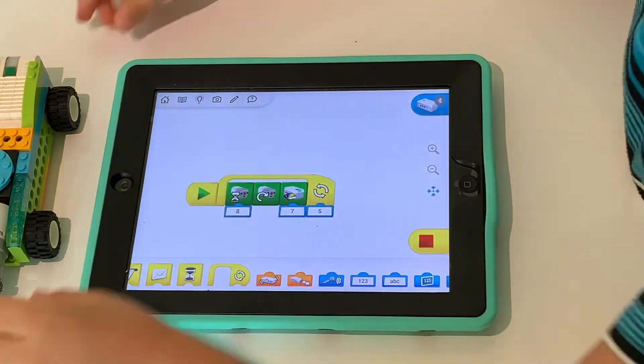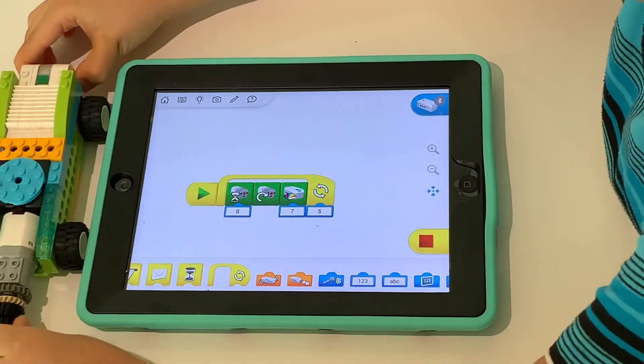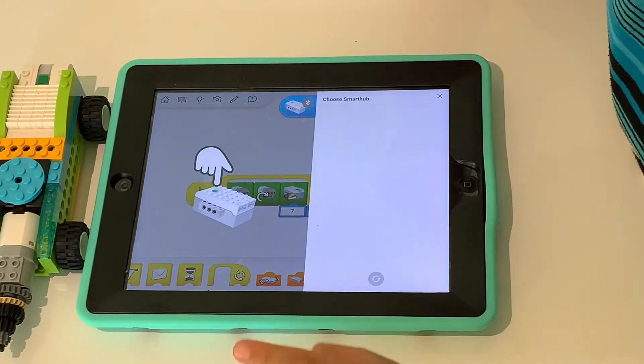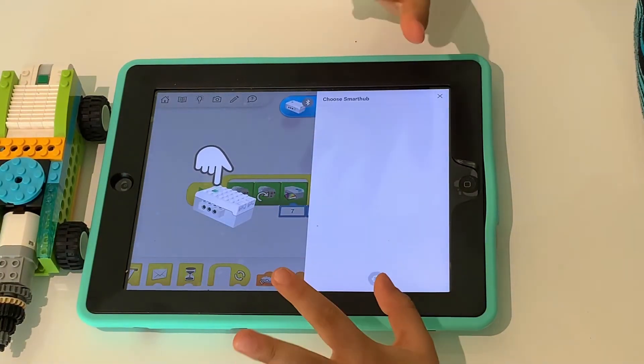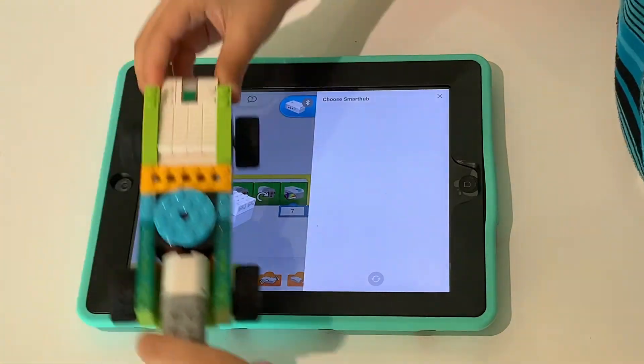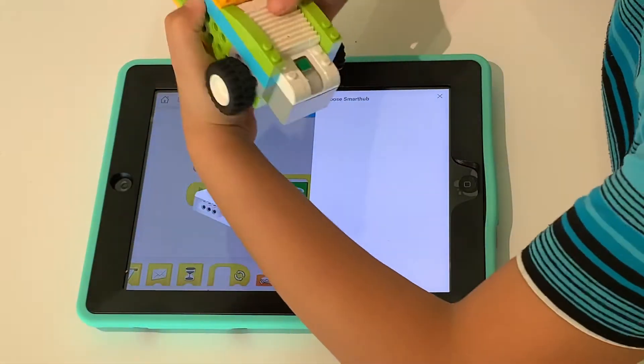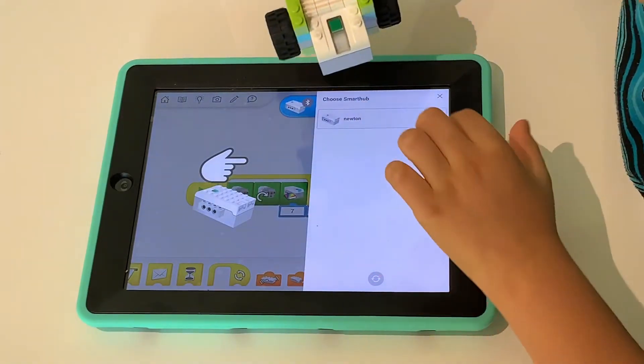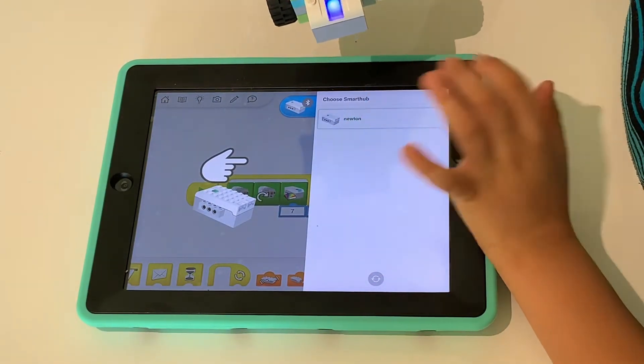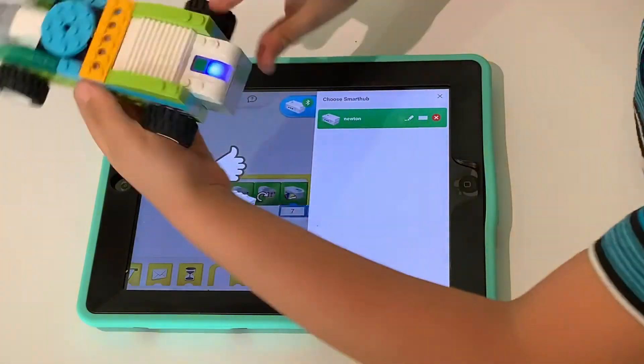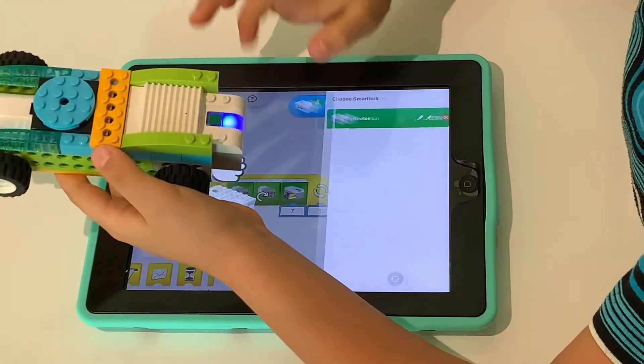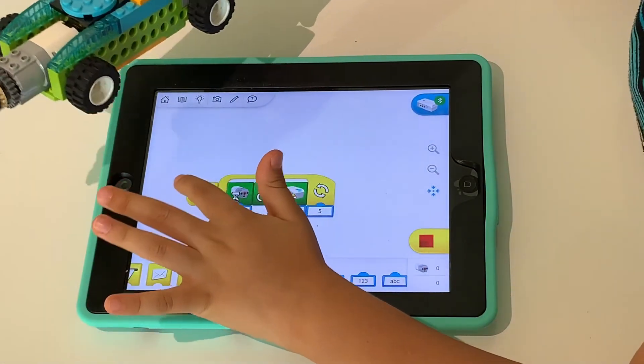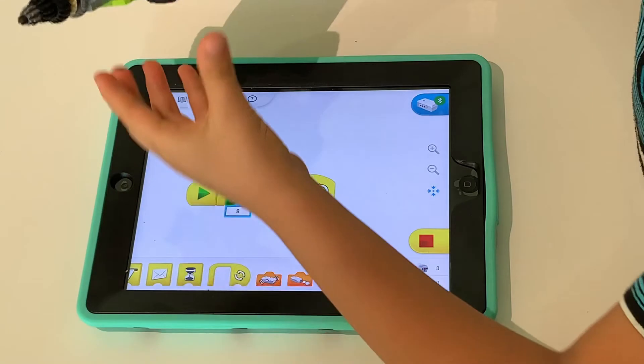And now, we need to connect the drill to the app. So, we press here, this blue button with the Bluetooth on it. Make sure Bluetooth is on. Okay? So now, it's asking us to press this green button on the SmartHub. And now, press this. And now, it's connected because it's blue. Now, now, you can finally press this button. And look what it does.